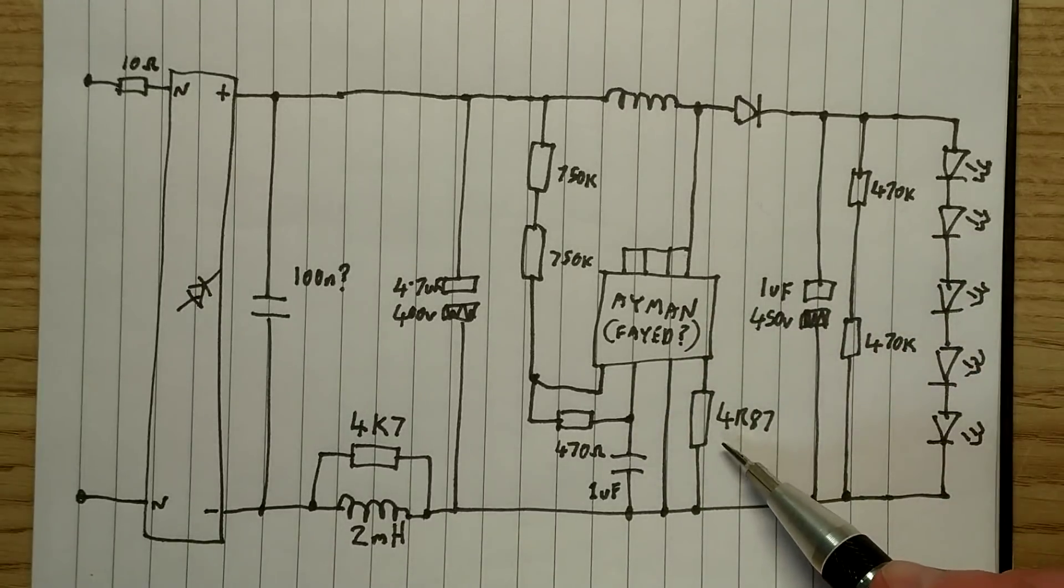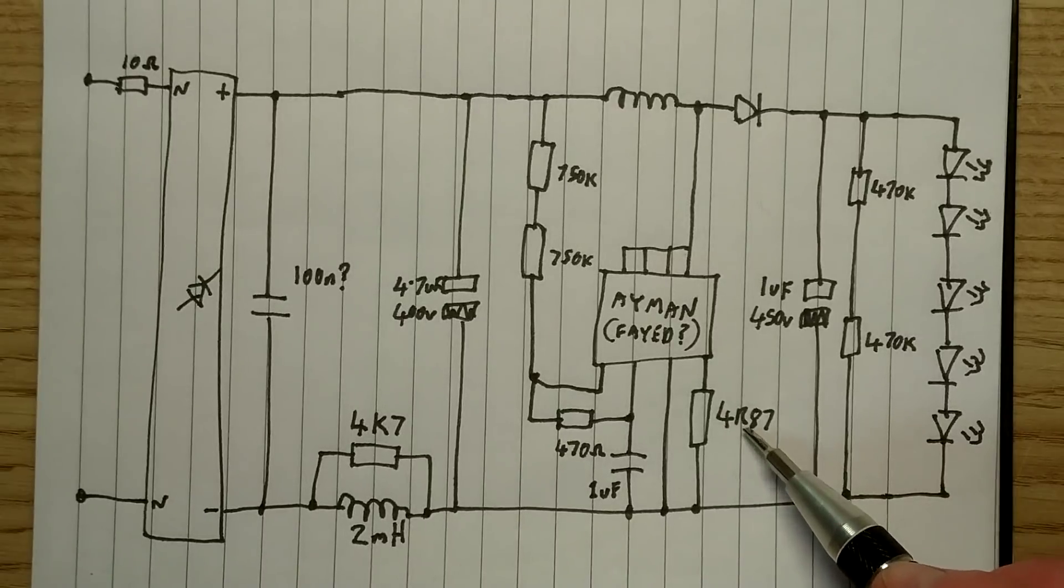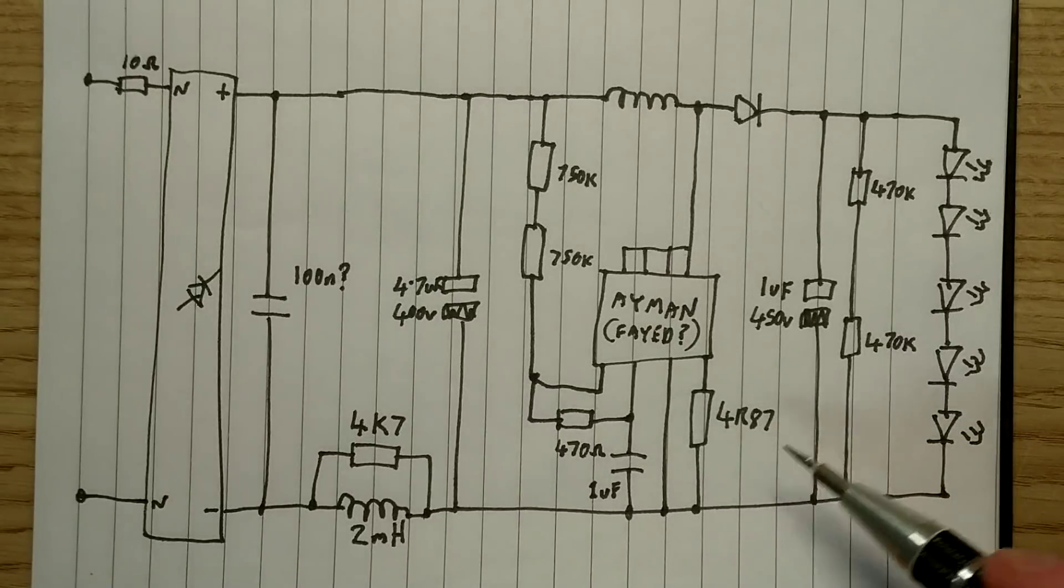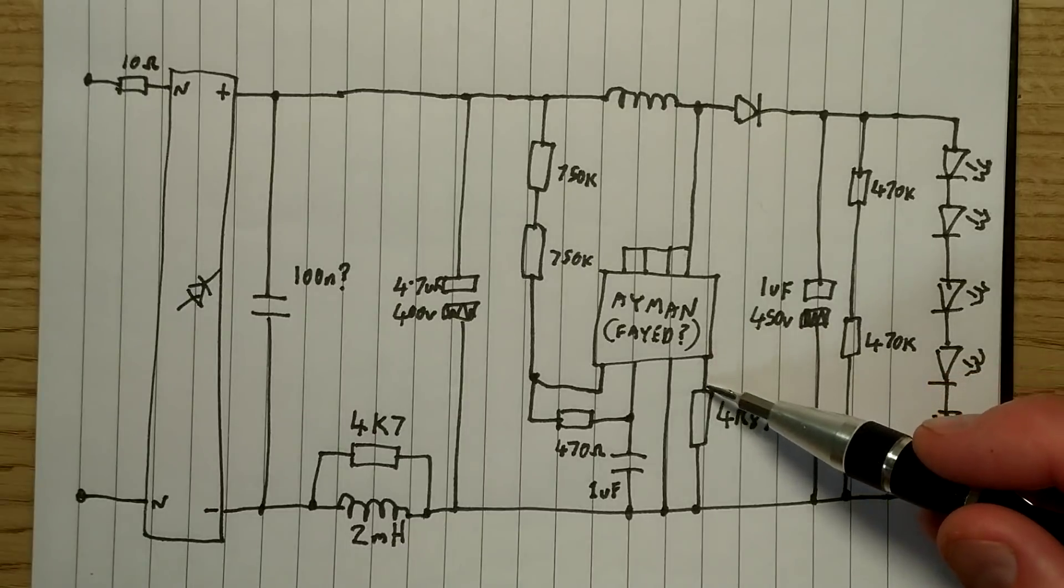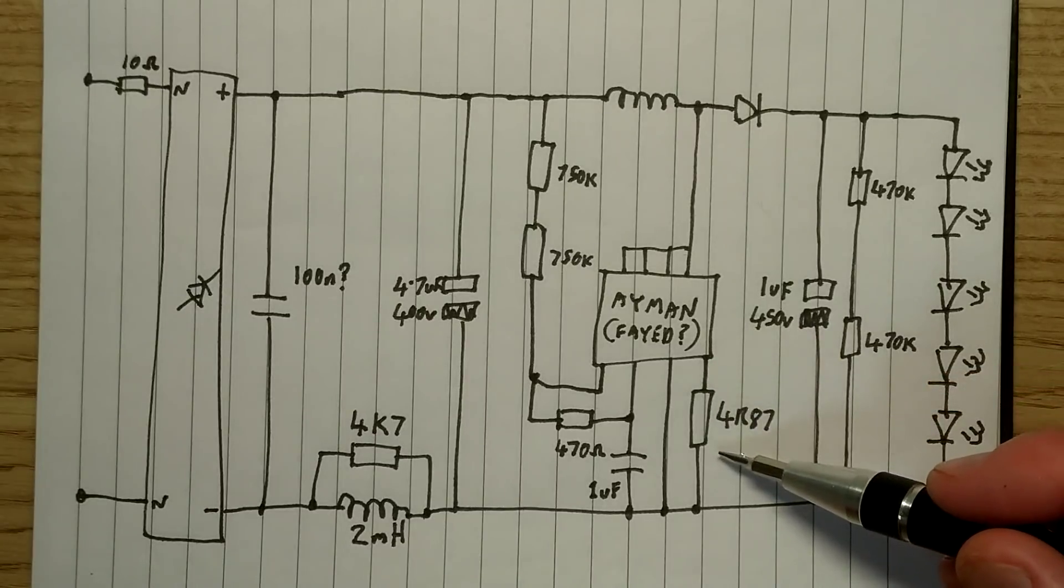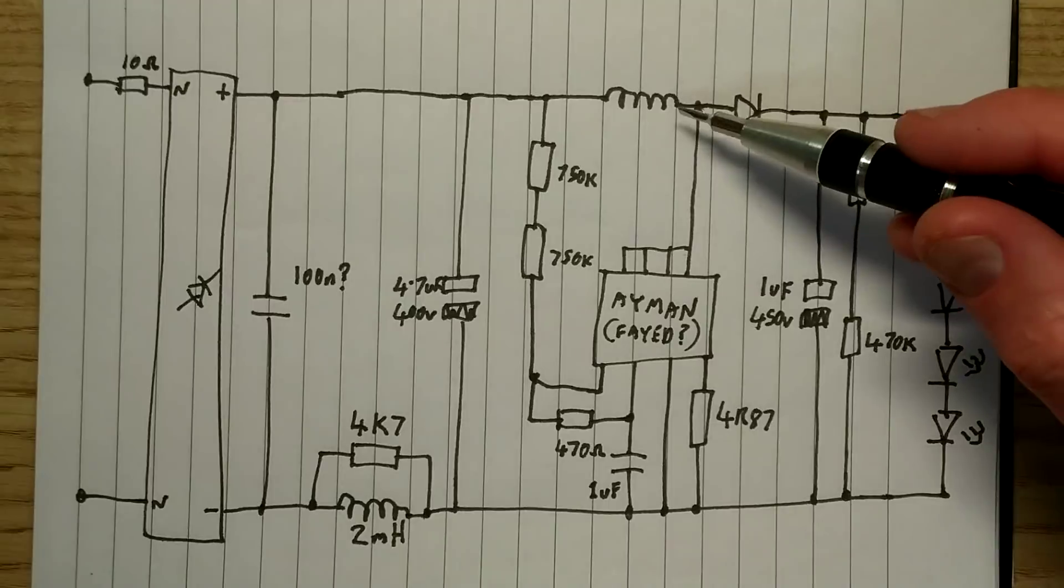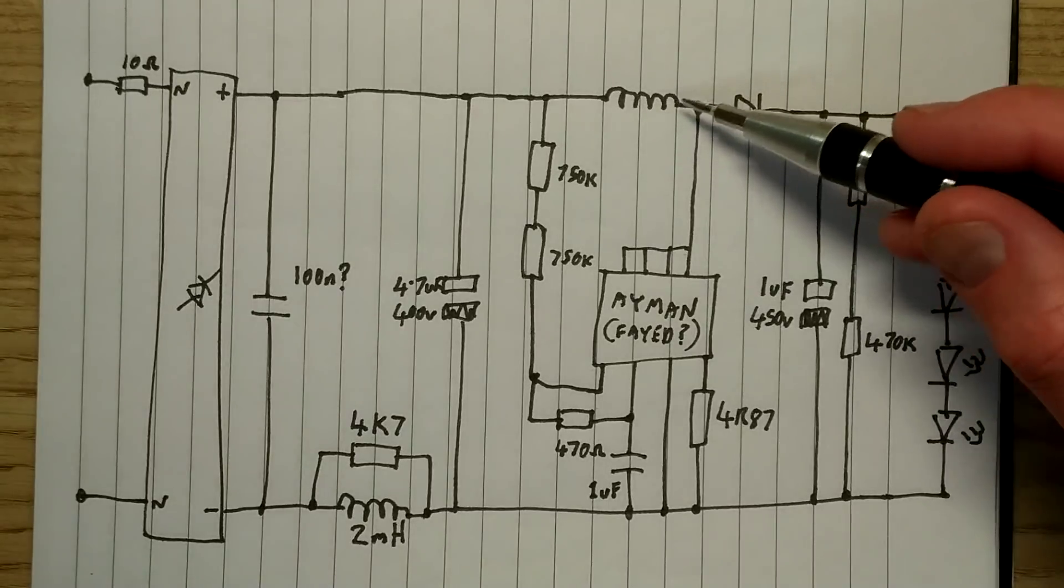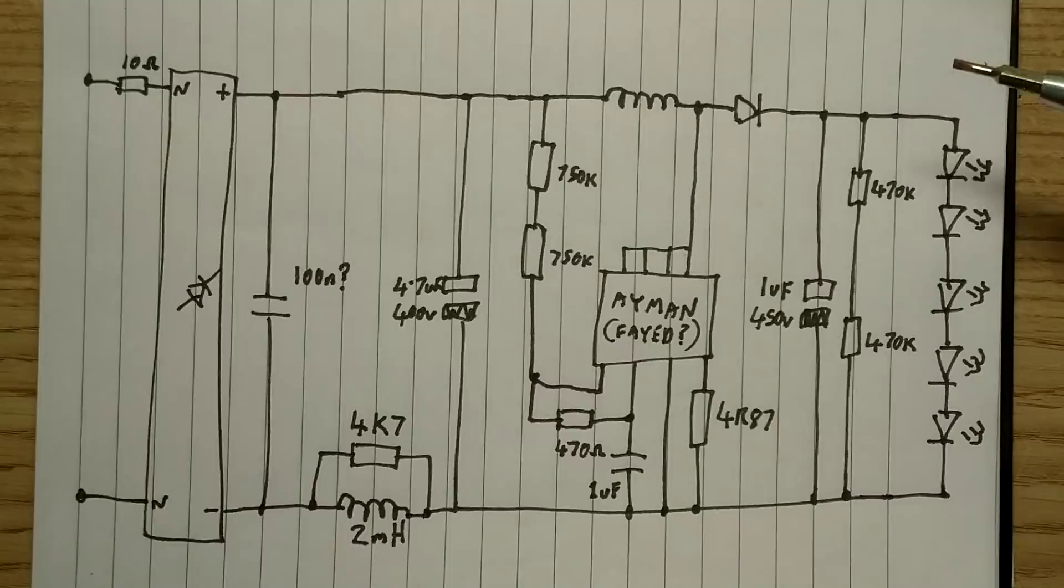There's a very precise resistor here, 4R87, 4.87 ohms if that's what it is, that is almost certainly being used as the current reference, the current sense circuit to determine when this inductor is passing a specific current, and it will control when this turns off.